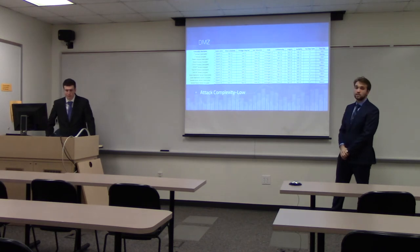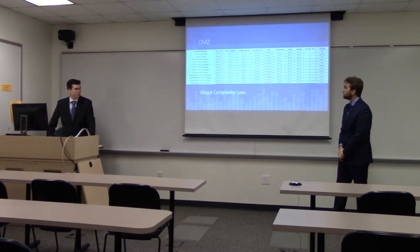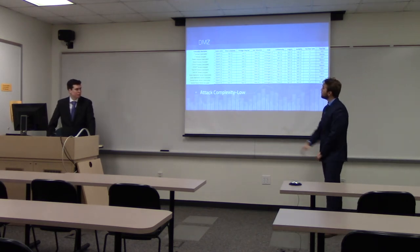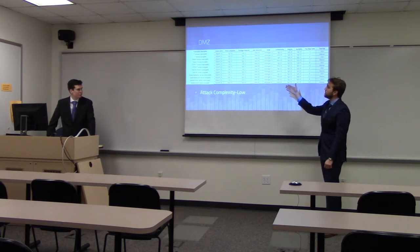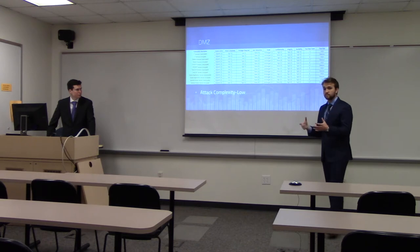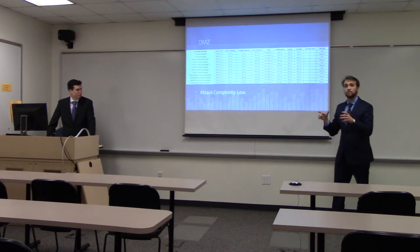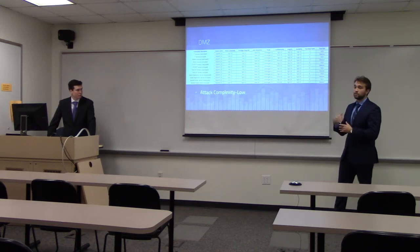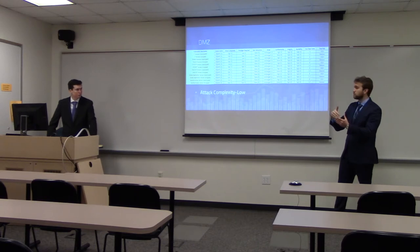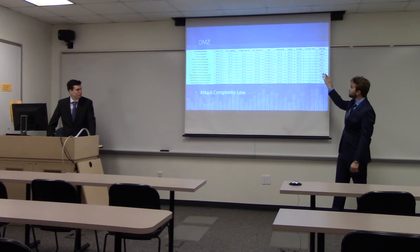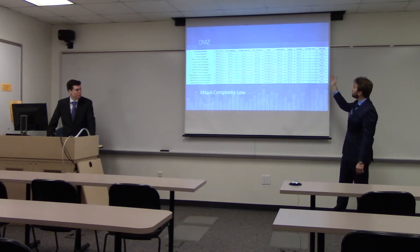This is the DMZ, or demilitarized zone. At this level, attack complexity is now low on some data streams because the DMZ is higher up in the Purdue model, meaning an attack would need to pass through fewer firewalls to access these data streams. This results in a higher final base score for unencrypted systems — up to 8 — while encrypted systems remain at 5.7, which is medium.